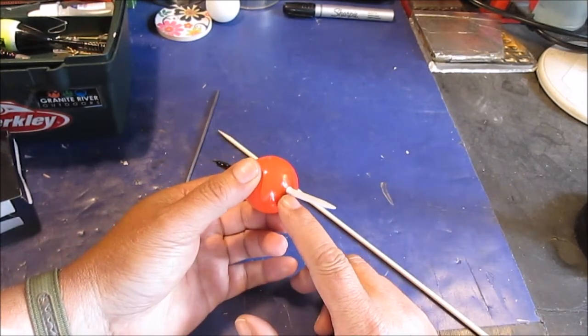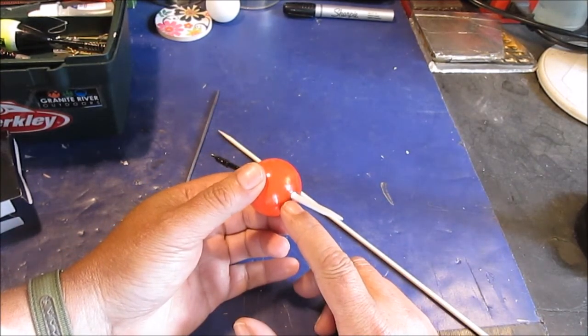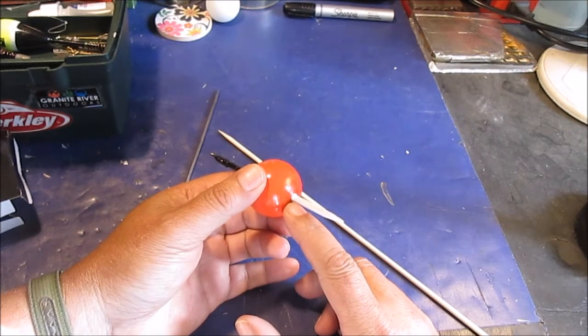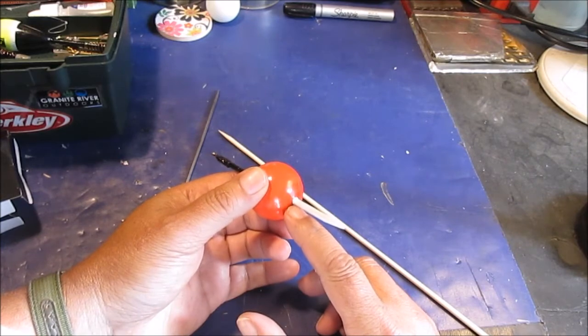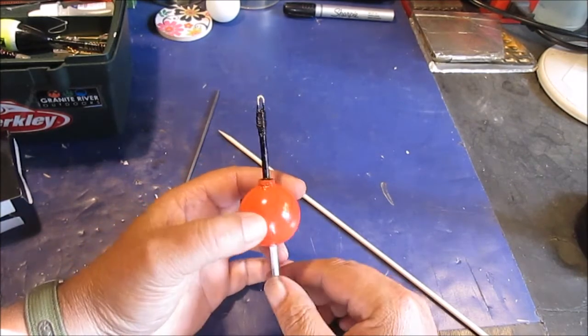We super glued this, but we let it dry overnight because it did make the plastic really soft on the ball. So it did some kind of chemical reaction where I let it harden overnight. It went back to being hard.